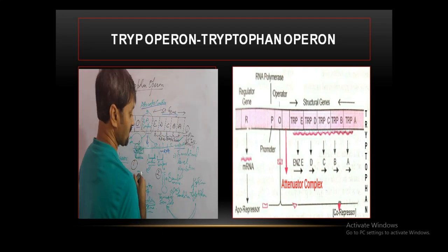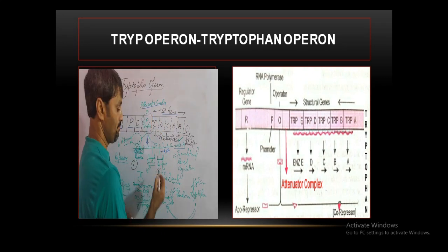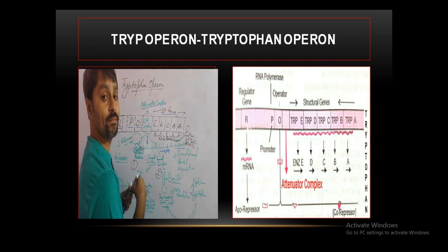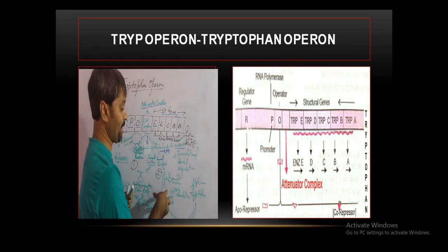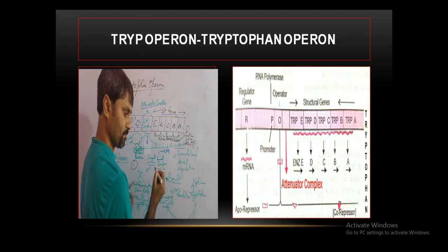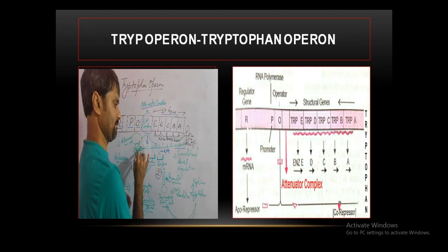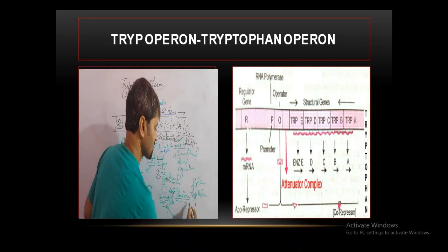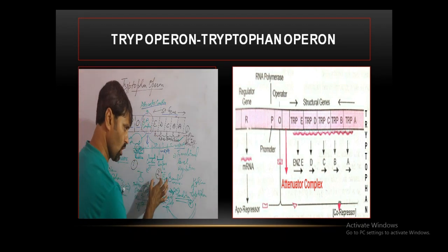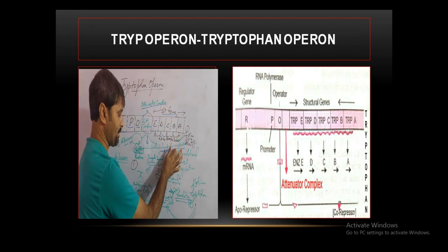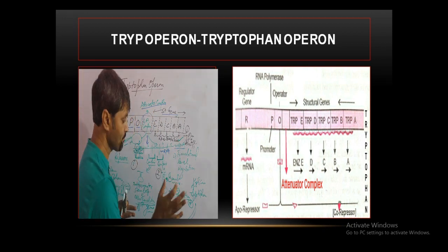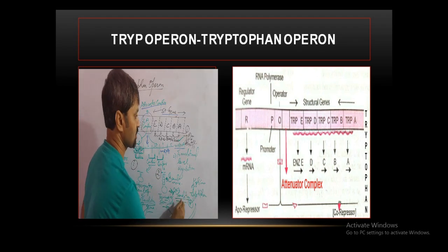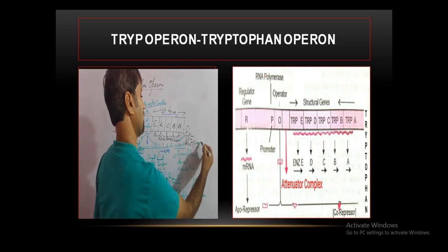But if the loop formation occurs between segments three and four, this is called the terminator stem loop. When the terminator stem loop is formed, the ribosome cannot bind to the messenger RNA, and it stops translation. This is how the second and third segment pairing versus the third and fourth segment pairing controls whether translation proceeds or stops, and the operon is switched on or off.